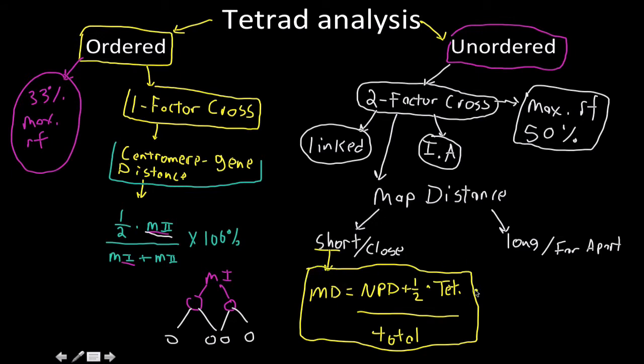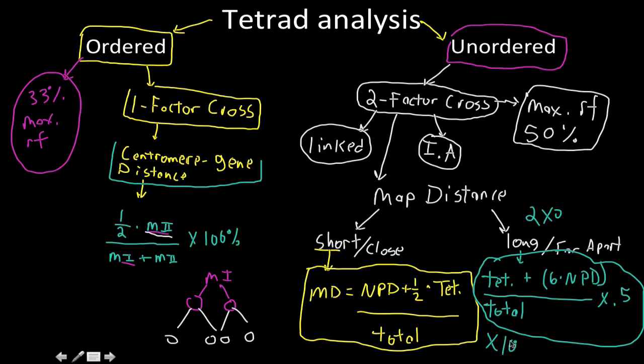If they're further apart, we have to account for double crossovers. The equation is: tetratype plus six times the non-parental dietype, divided by the total, times 0.5, then multiply by 100%.